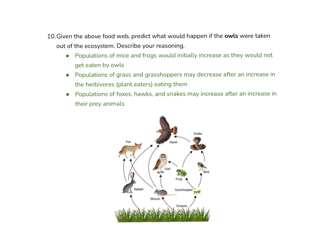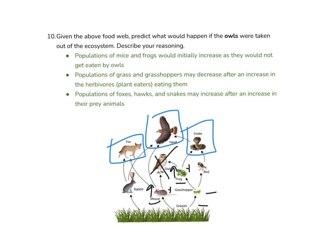Let's make some predictions. If owls were taken out of the ecosystem, the organisms the owl eats — frogs and mice — would increase. But the organisms those animals eat would decrease: mice eat grass and grasshoppers, so grass and grasshopper populations would decline. The other carnivores — foxes, hawks, and snakes — may benefit because the owl was a competitor for food.